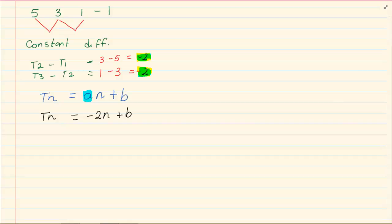In order to calculate B, you have to rewrite the number pattern. So we've got 5, 3, 1 and minus 1.